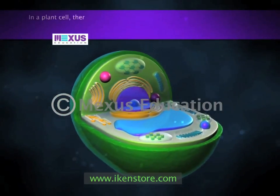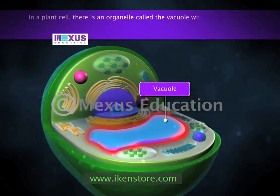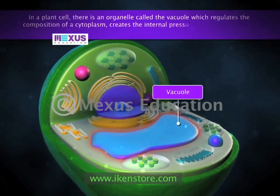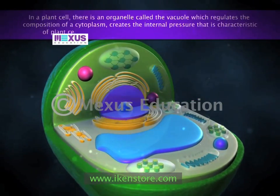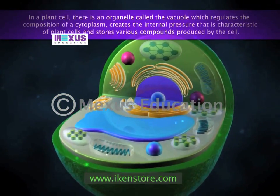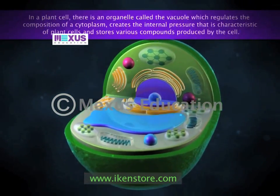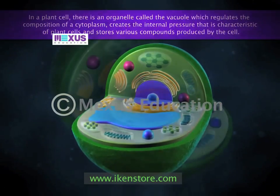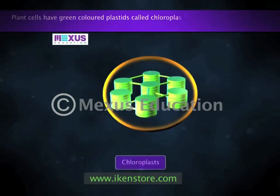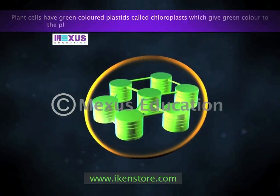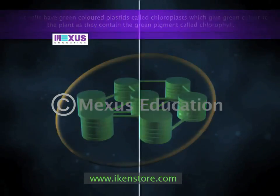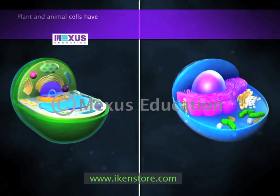In a plant cell there is an organelle called the vacuole, which regulates the composition of the cytoplasm, creates the internal pressure characteristic of plant cells, and stores various compounds produced by the cell. Vacuoles are generally a lot smaller in size in animal cells. Plant cells also have green-colored structures called chloroplasts, which provide the green color to the plant as they contain the green pigment called chlorophyll.